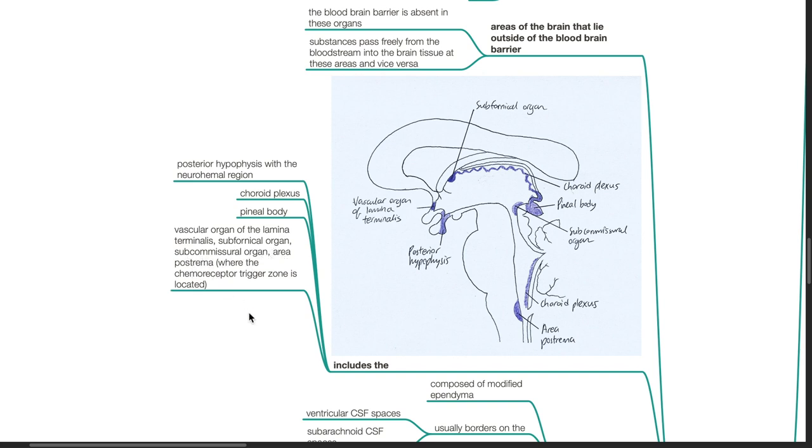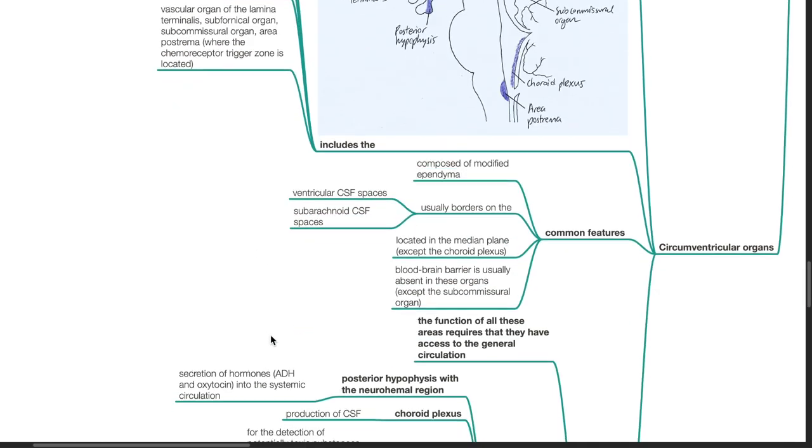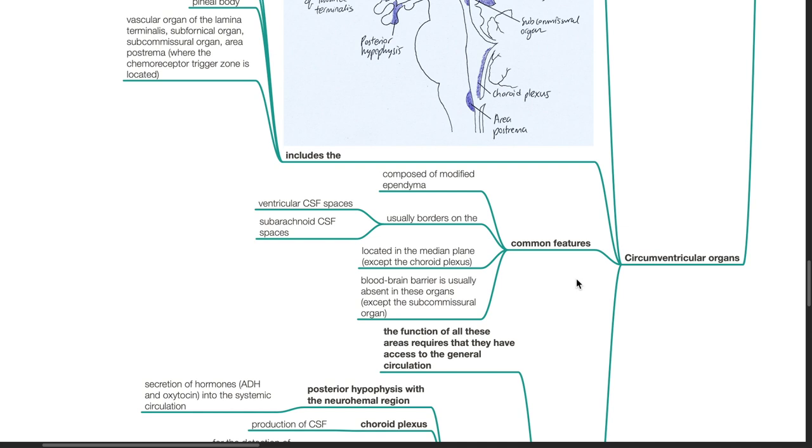Area postrema where the chemoreceptor trigger zone is located. Common features of circumventricular organs include: They are composed of modified ependyma, they usually border on the ventricular CSF spaces and subarachnoid CSF spaces. They are located in the median plane except for the choroid plexus. The blood-brain barrier is usually absent in these organs except for the subcommissural organ.